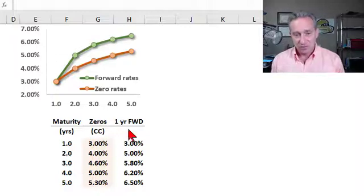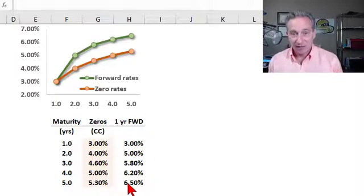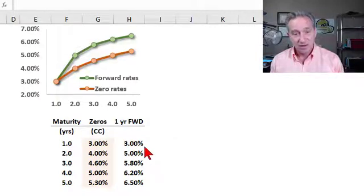If I have the zero rates, I can then extract the implied forward rates because by definition, that's what they are. The forward rates are the rates that are implied by the zero rates.